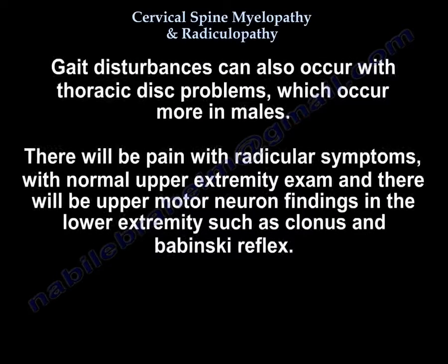Gait disturbance can also occur with thoracic disc herniation, which occurs in males. You will have pain with radicular symptoms with a normal upper extremity exam, and upper motor neuron findings in the lower extremity such as clonus and Babinski.